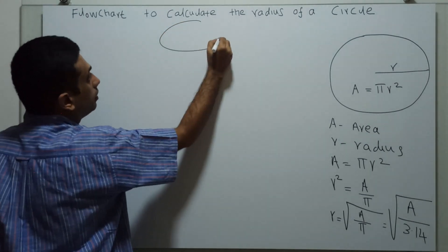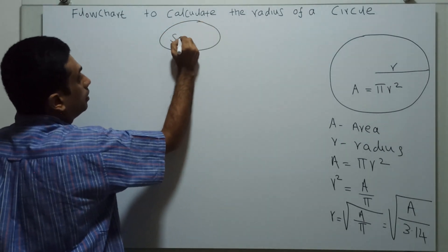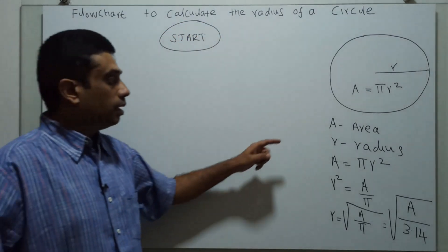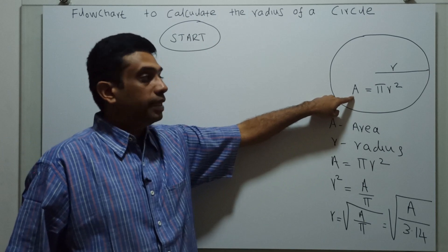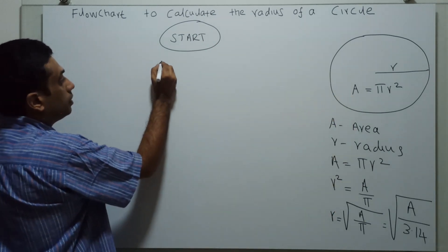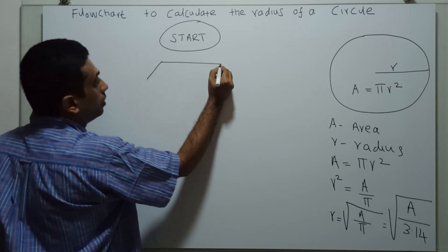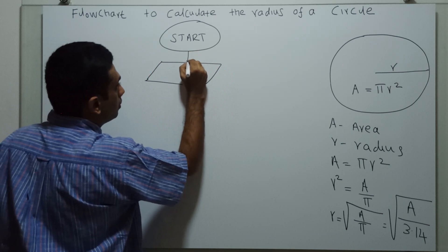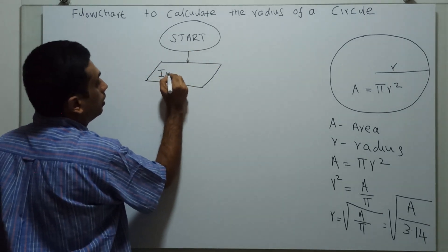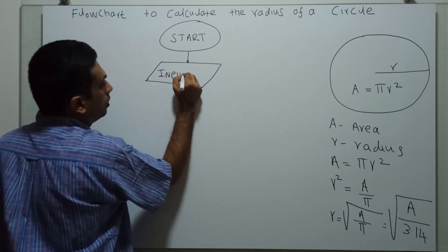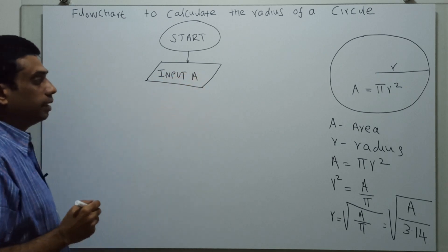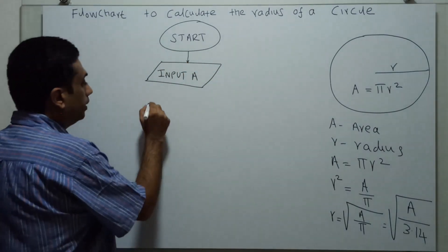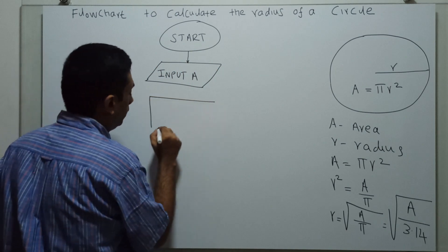So this is the logical start of the flow chart. I am going to obtain the area as an input. Input 'a' — area.